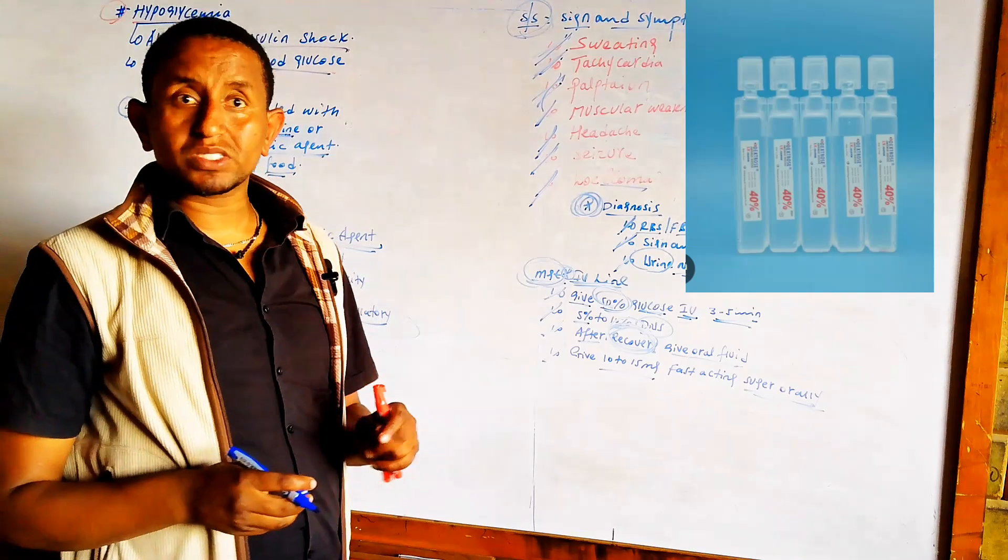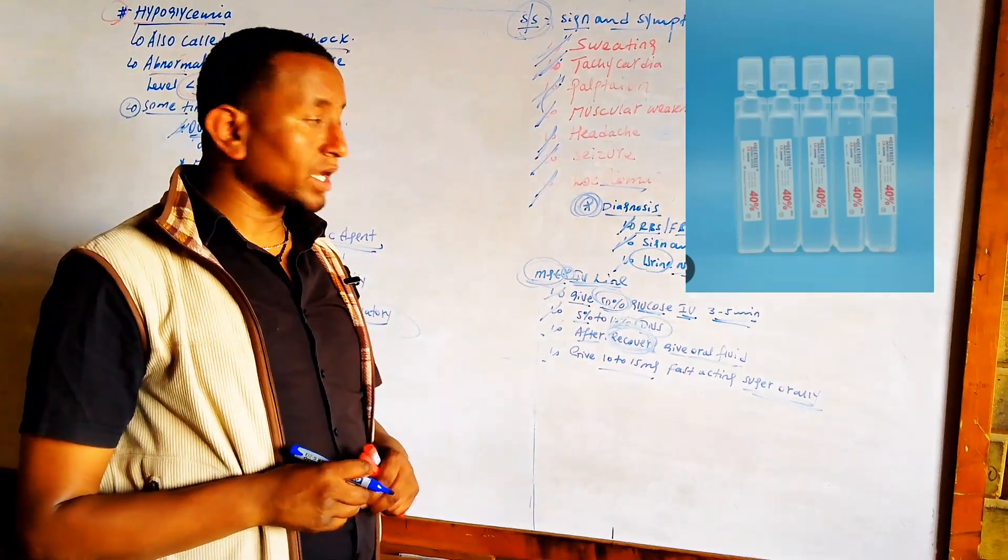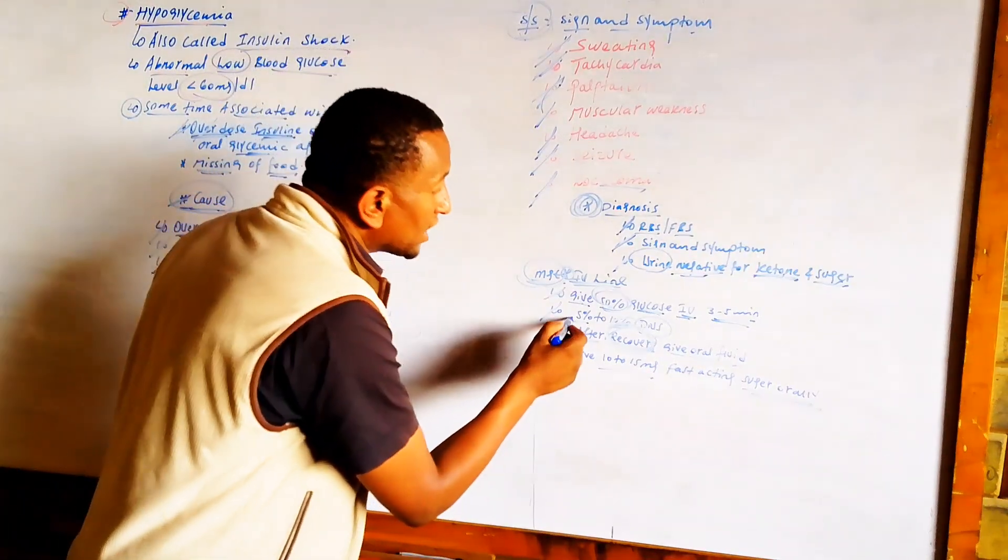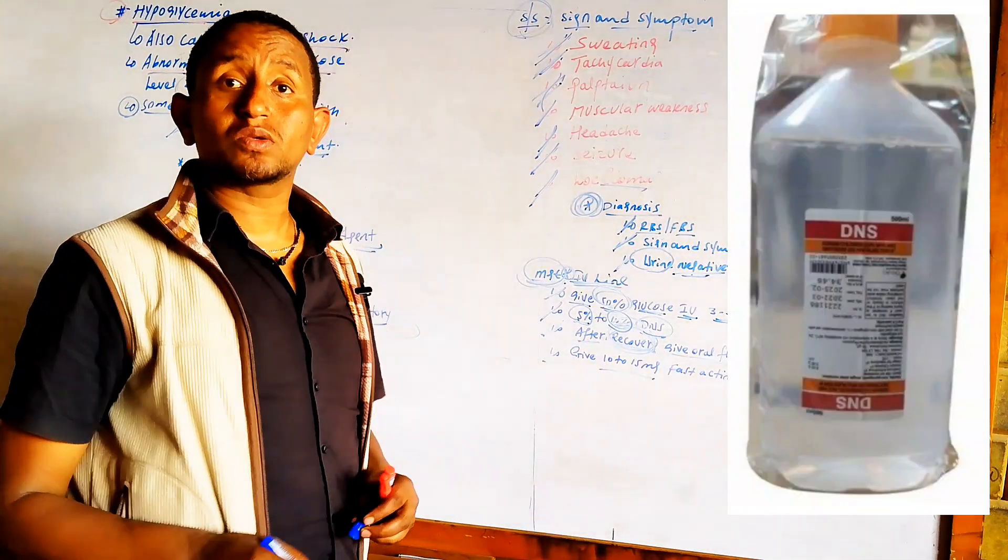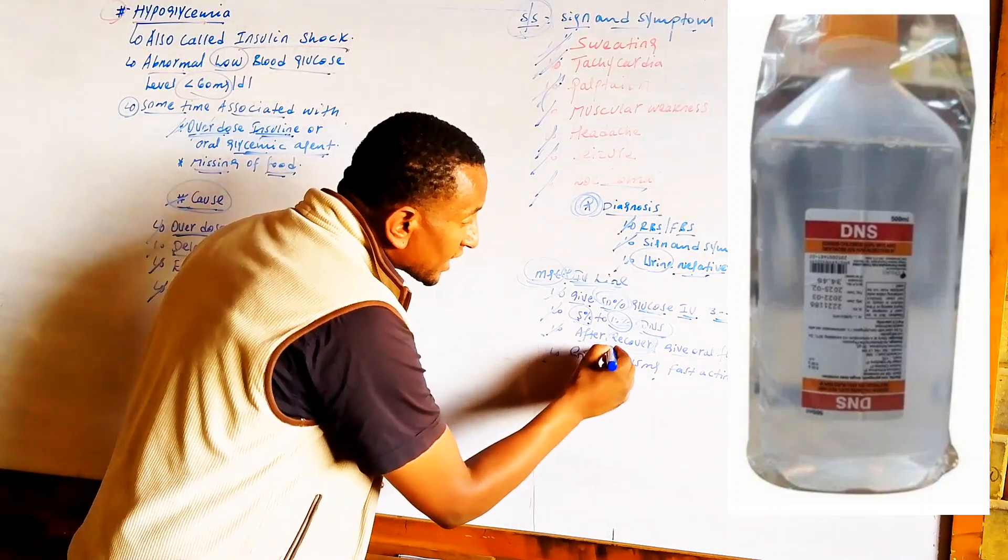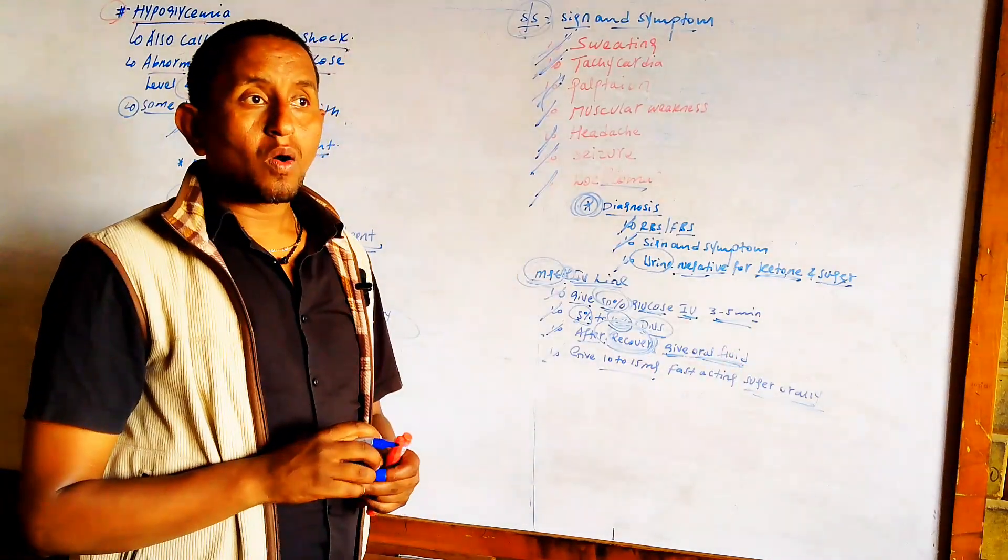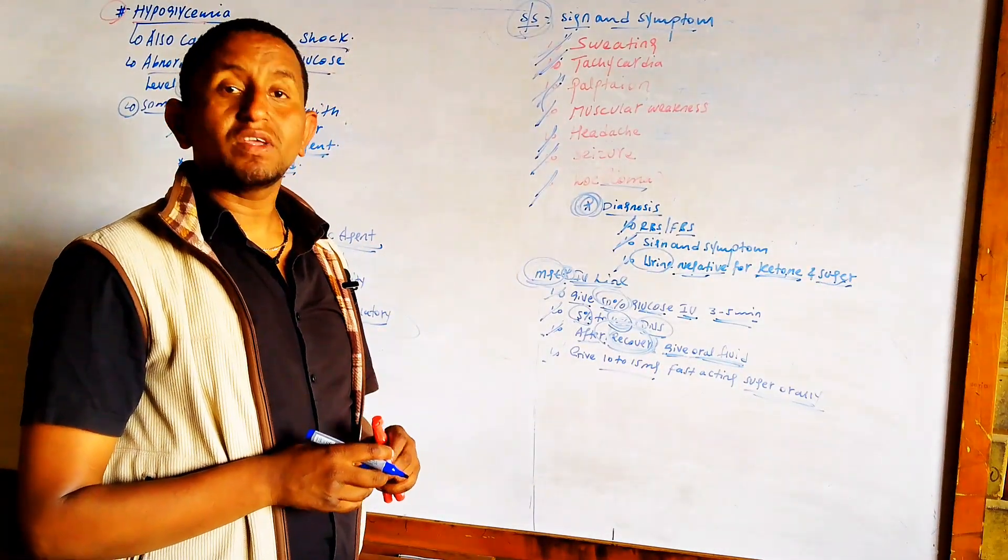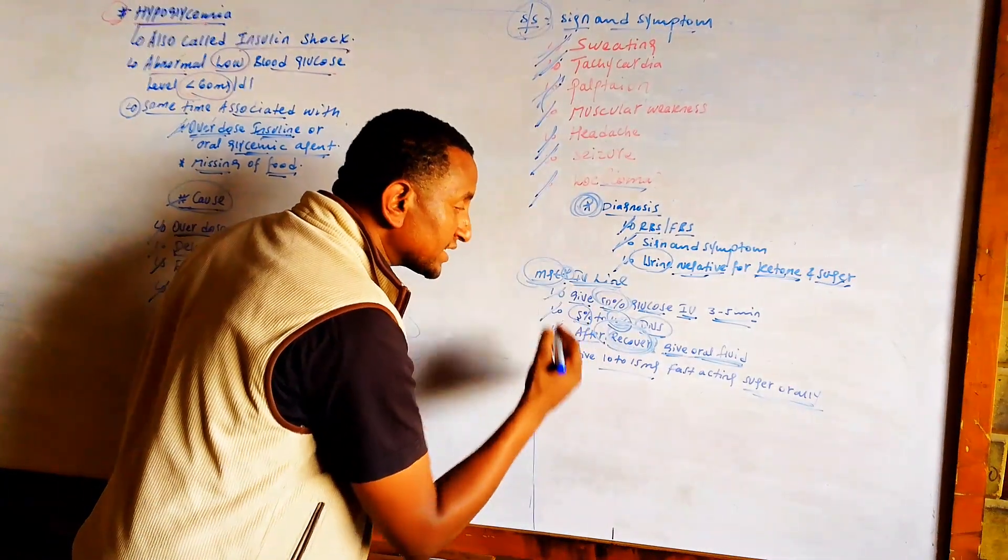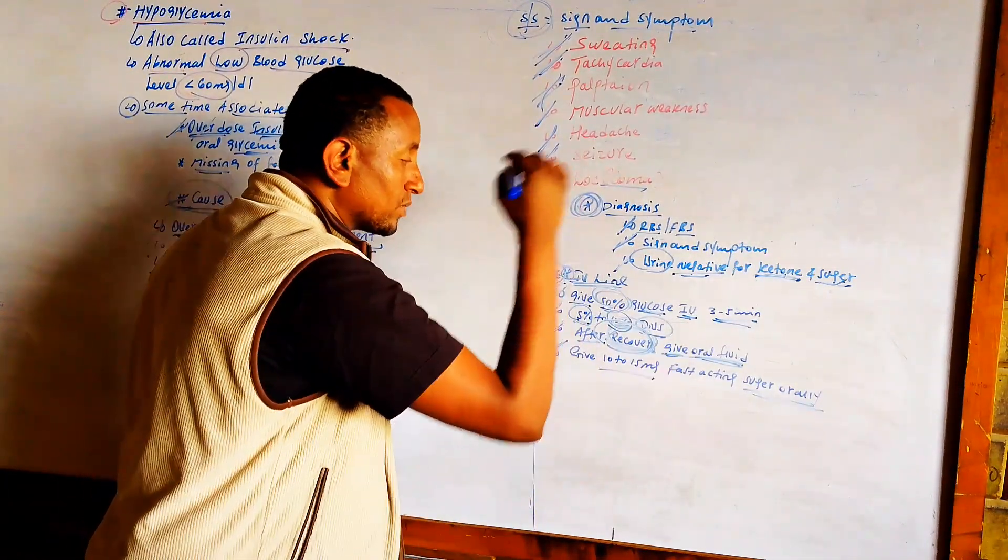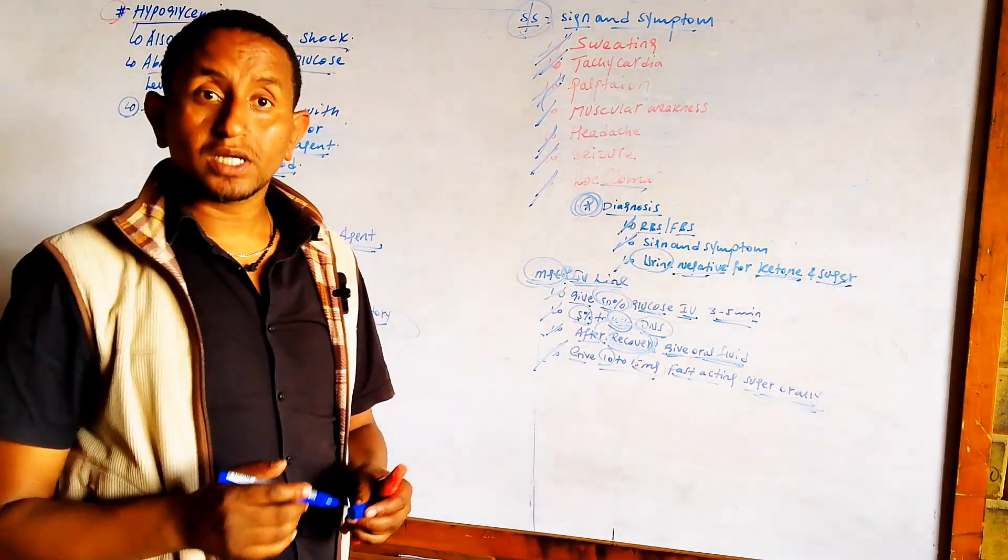If no progress, secure 5% or 10% DNS - dextrose in normal saline. After that, if the patient recovers from shock or loss of consciousness, give oral fluid. If a patient returns to consciousness after resuscitation, give 10 to 50 grams of fast-acting sugar orally.